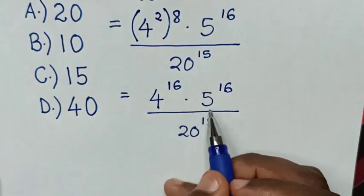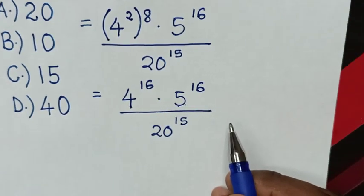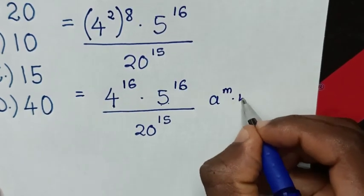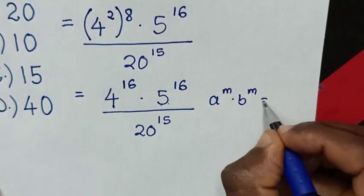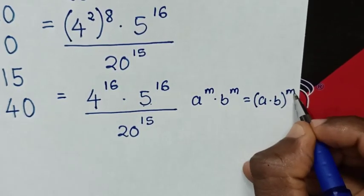Then from this multiplication of exponent with different bases but same power, we will apply exponential rule that A power of M times B power of M is equal to A times B bracket power of M.